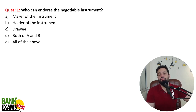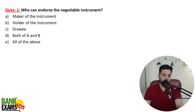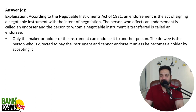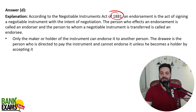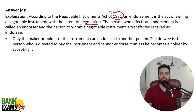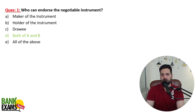Who can endorse a Negotiable Instrument? A Negotiable Instrument can be endorsed by the maker or the holder of the instrument. So 'D — both A and B' is the correct answer, according to the Negotiable Instruments Act 1881. An endorsement is an act of signing a negotiable instrument with the intent of negotiation — that is, transferring the rights of the instrument, specifically the right to receive payment, to someone else. So the endorsement right belongs to the maker and the holder.